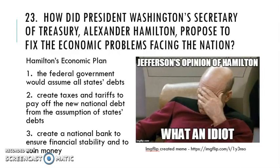Question 23 asks how did President Washington's Secretary of Treasury, Alexander Hamilton, propose to fix economic problems? Alexander Hamilton is the Secretary of Treasury and an economic genius. He said to the states, you're being burdened by Revolutionary War debts, so the federal government is going to take it all off your shoulders and carry that burden. Some southern states hated this because they had already paid off their debt, while most of the Revolutionary War had been fought in the North.